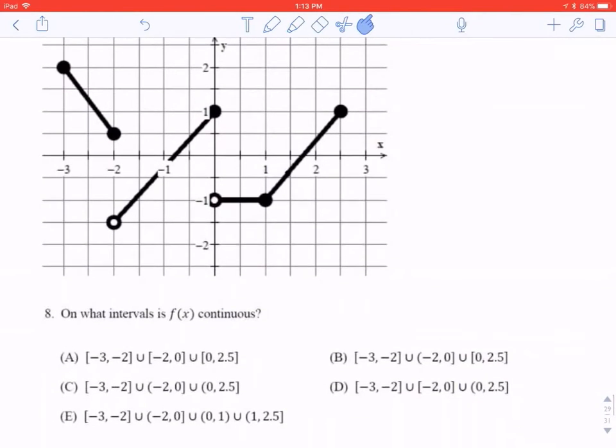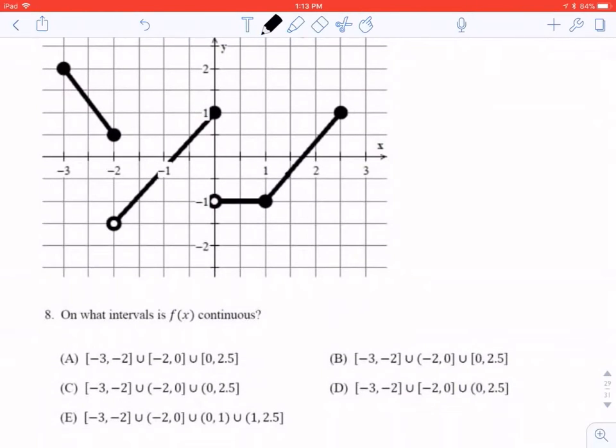Same picture. Number 8. On which intervals is it continuous? Well, it's continuous from negative 3 to negative 2, which all the answers show that. It's continuous right after negative 2 to 1. Pardon me, not to 1, to 0. This is 0 here. Continuous means we can trace it without lifting up our pencil. It's continuous here, here, and here. So that middle interval goes from negative 2 to 0. It does not include negative 2.